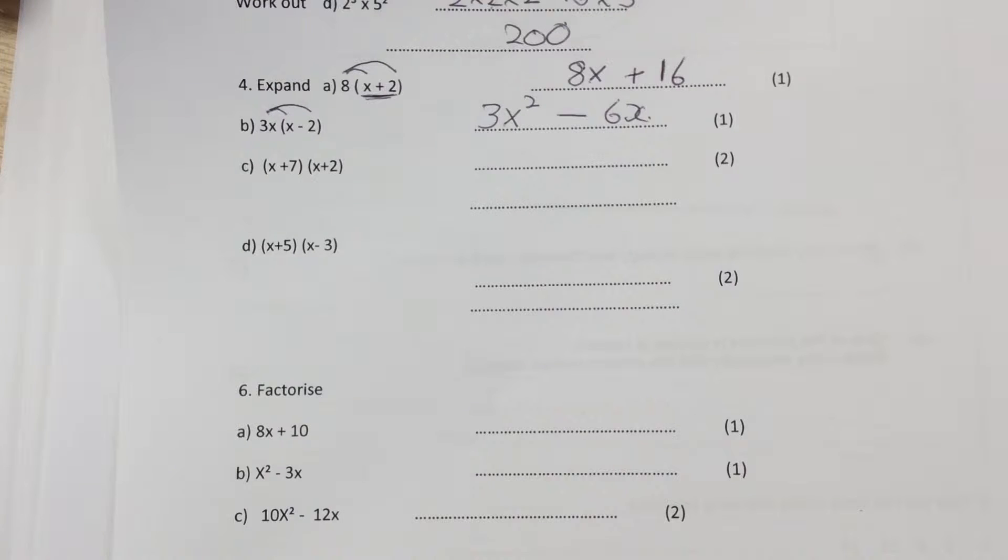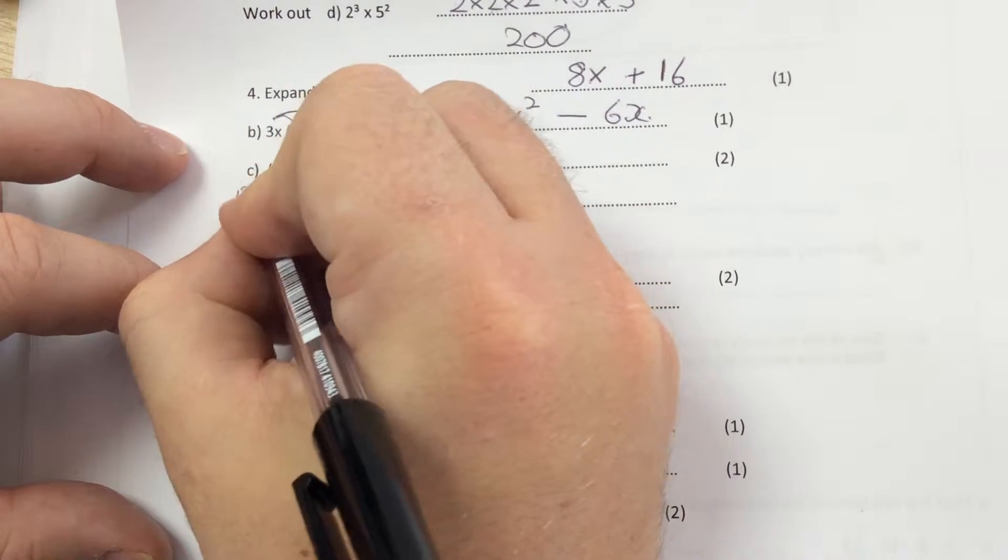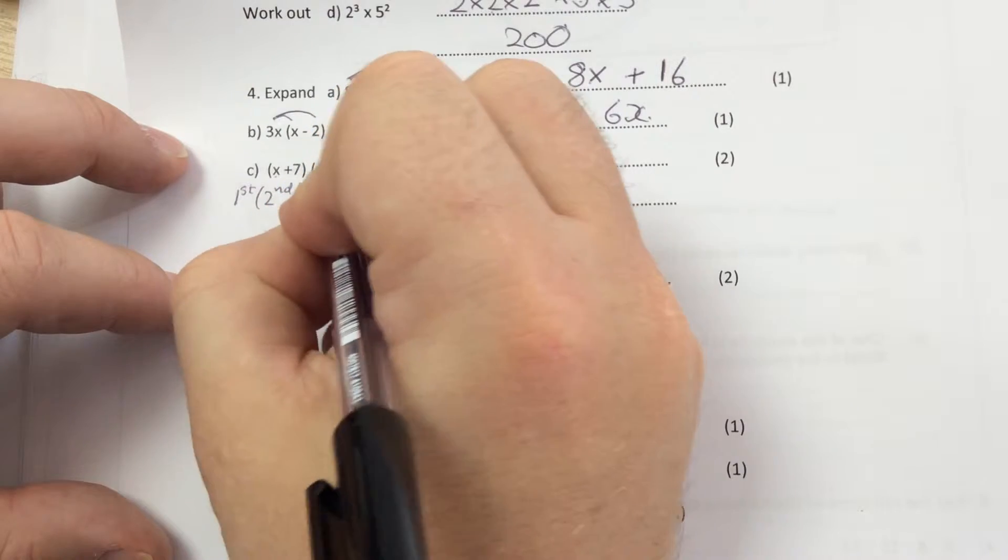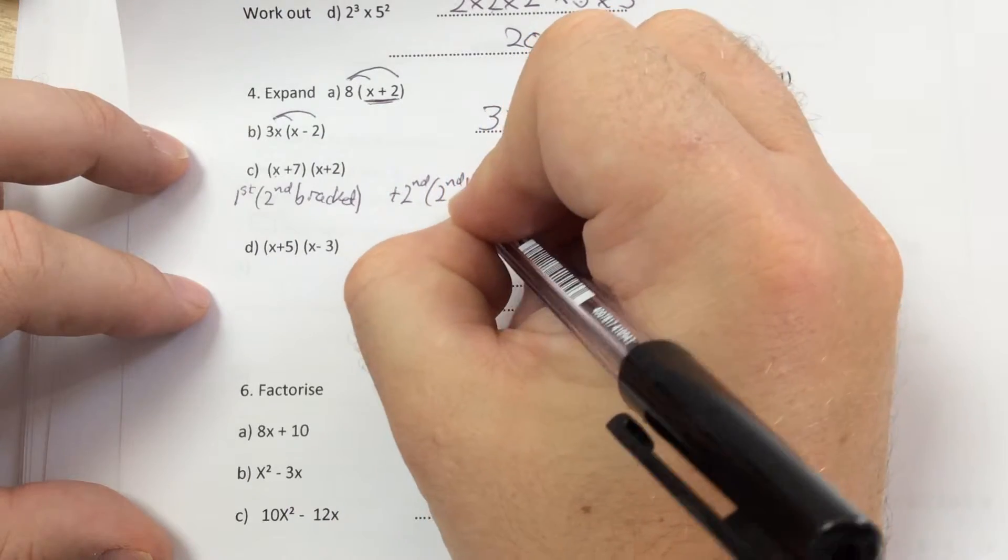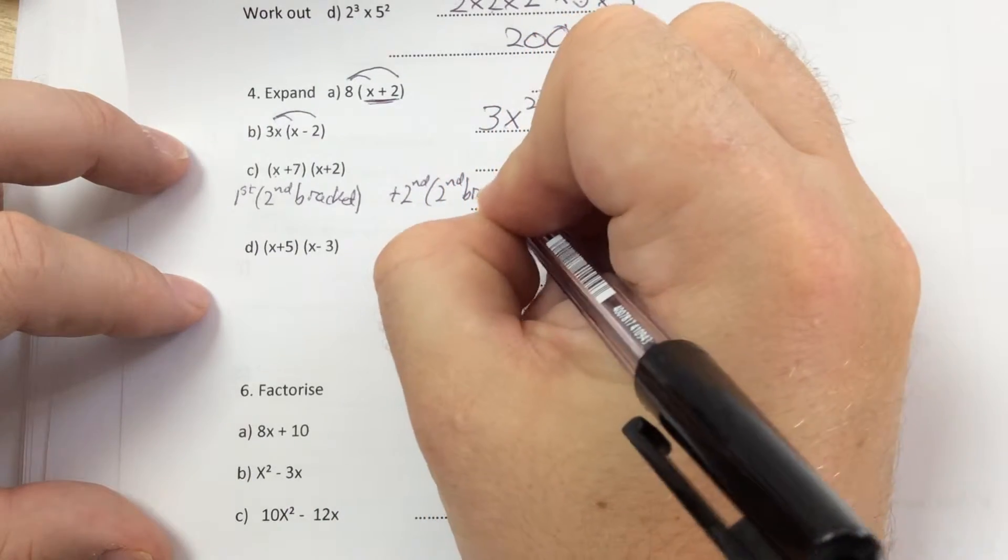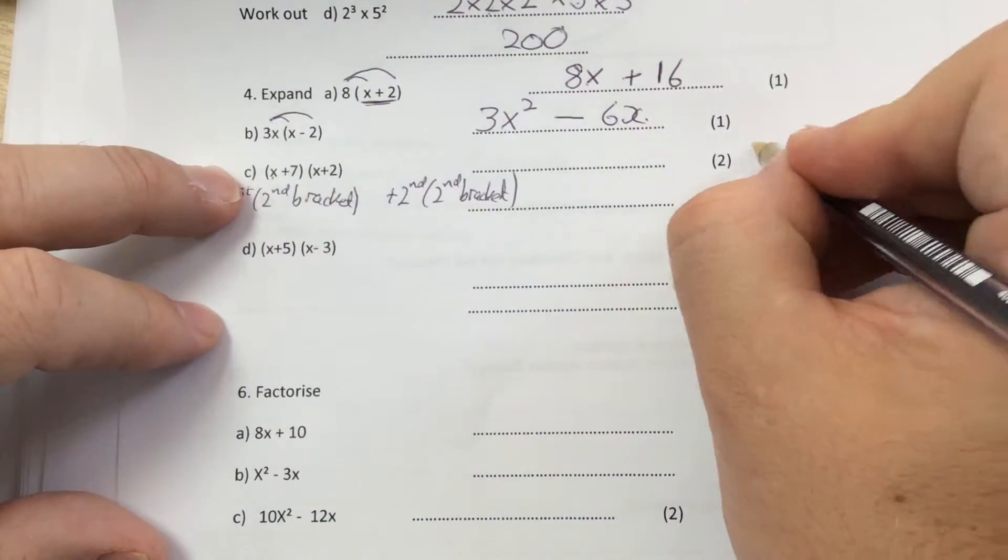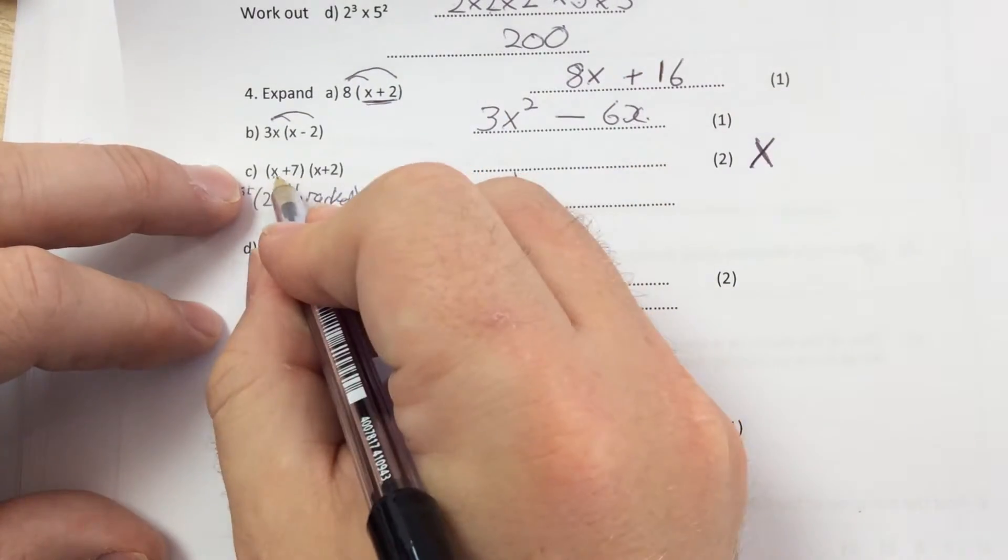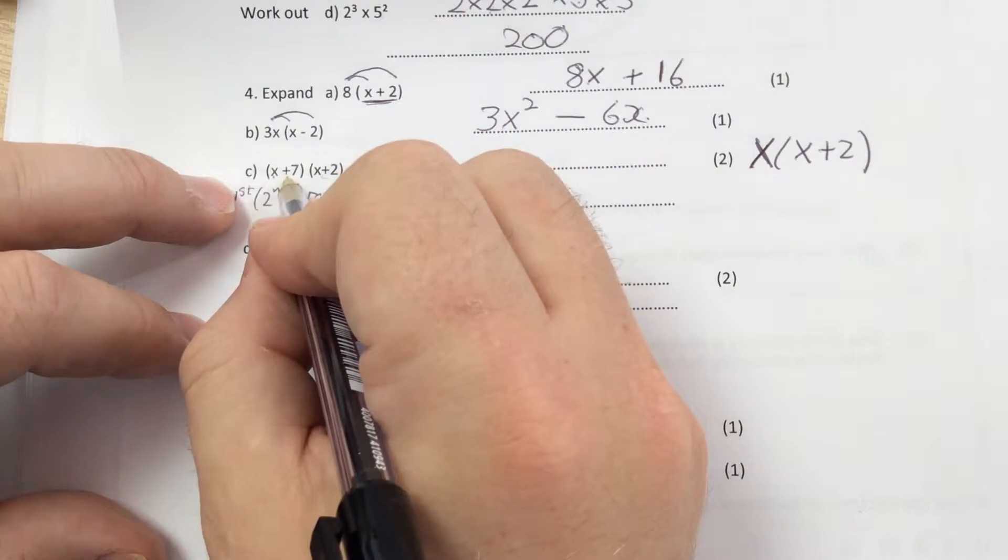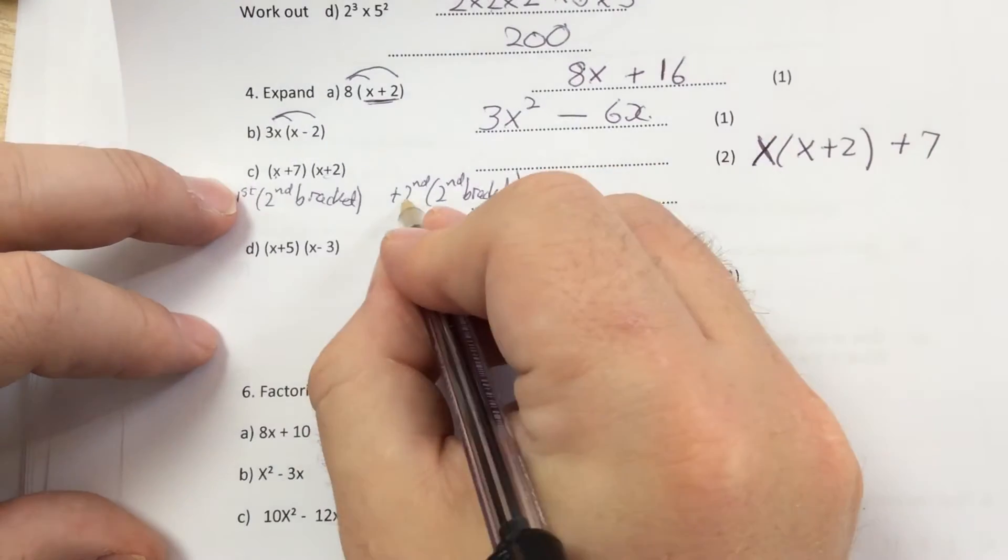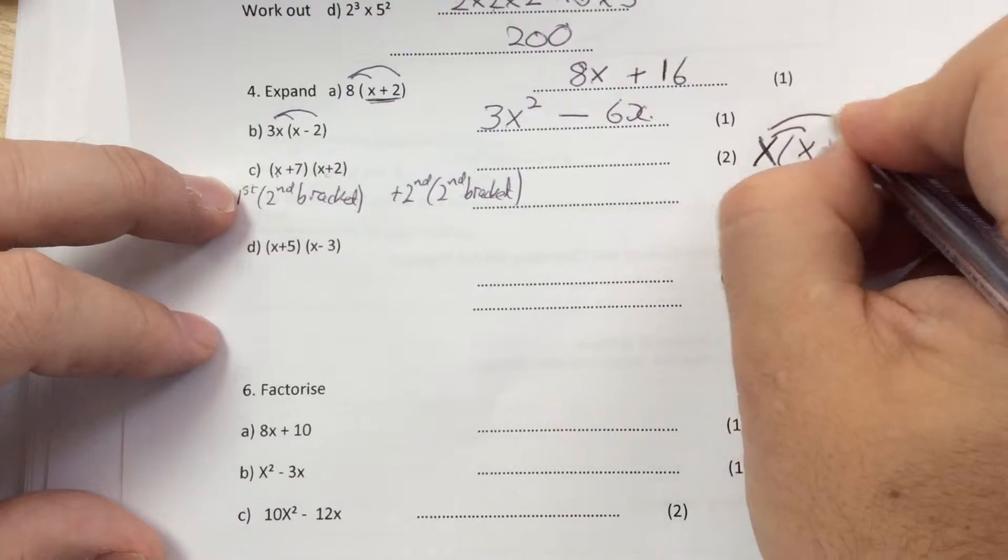Part c and d are probably the hardest. What you've got to do, if you remember, you do the first term times the second bracket, and then you do the second term times the second bracket. So you're splitting that first bracket up. So the first term is the first thing in that bracket. So you've got x and then it's times all that second bracket, which is x plus 2. And then you've got the plus 7, because that's the second term, times the second bracket, which is x plus 2. And what we do now is multiply them out.